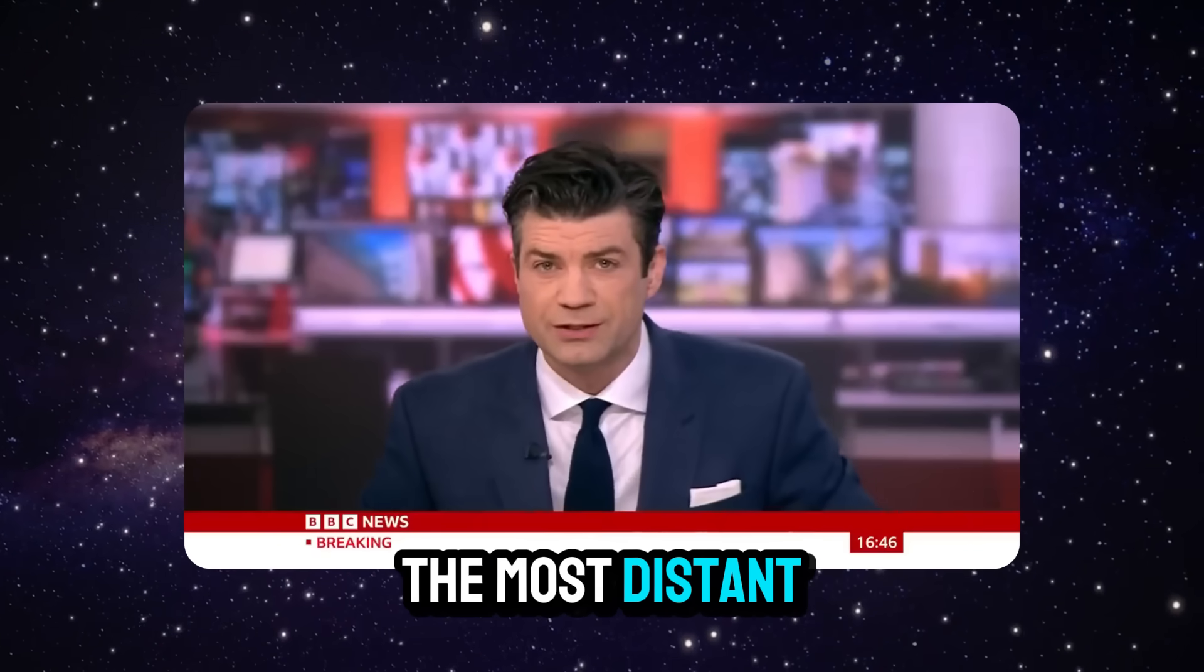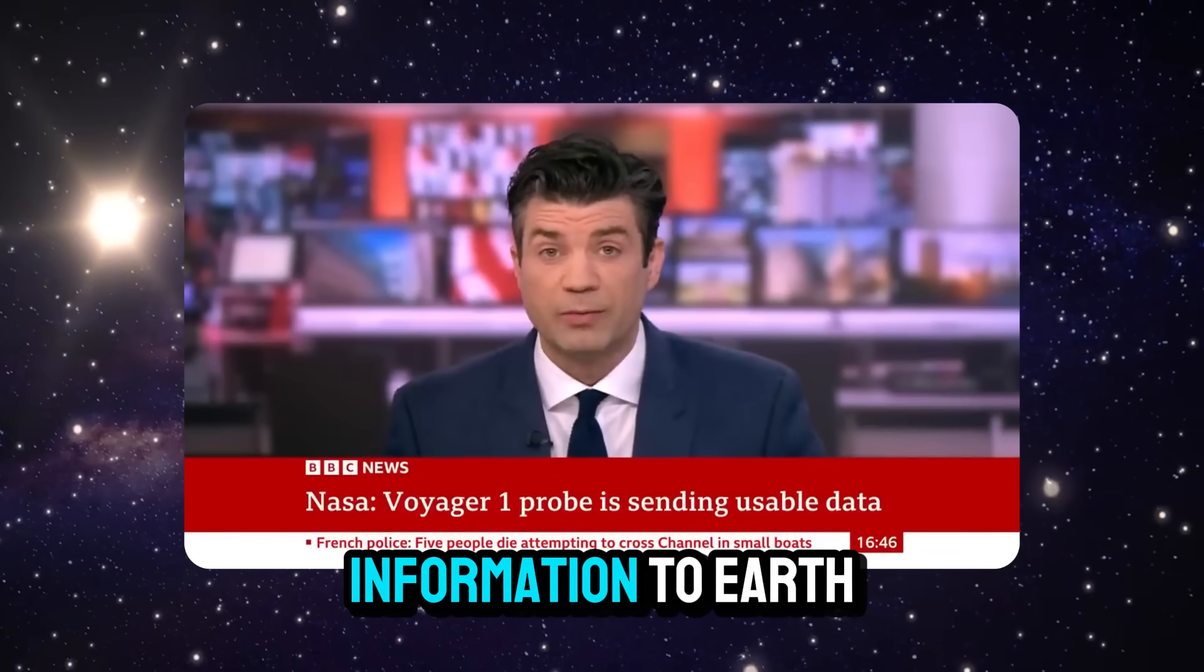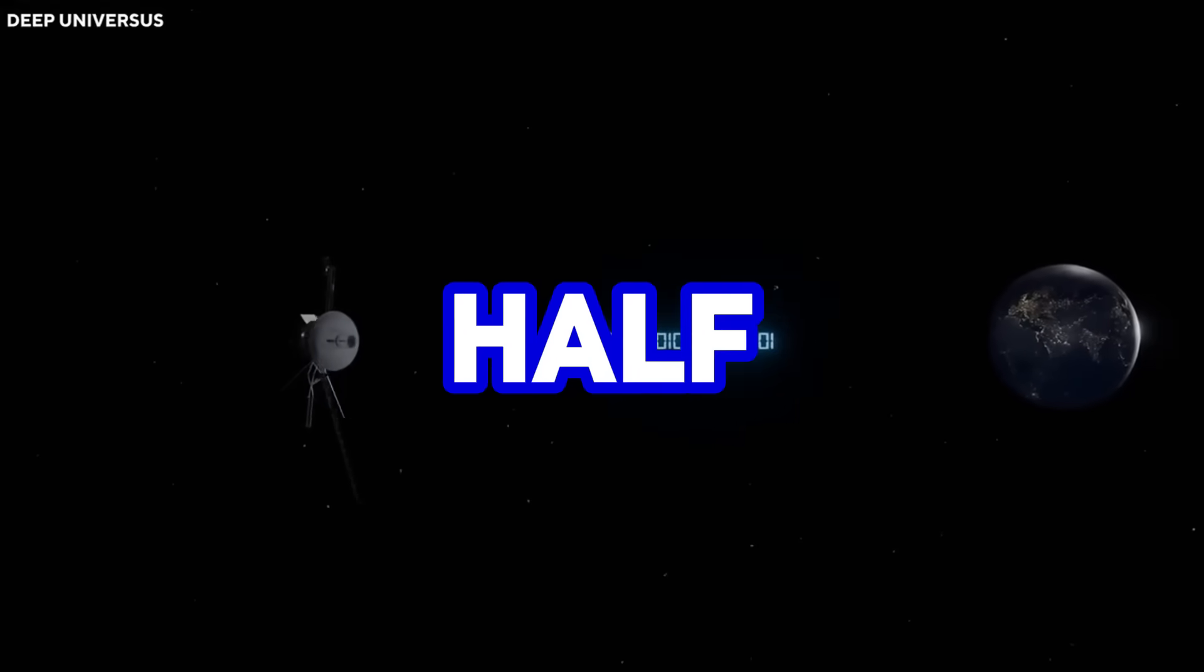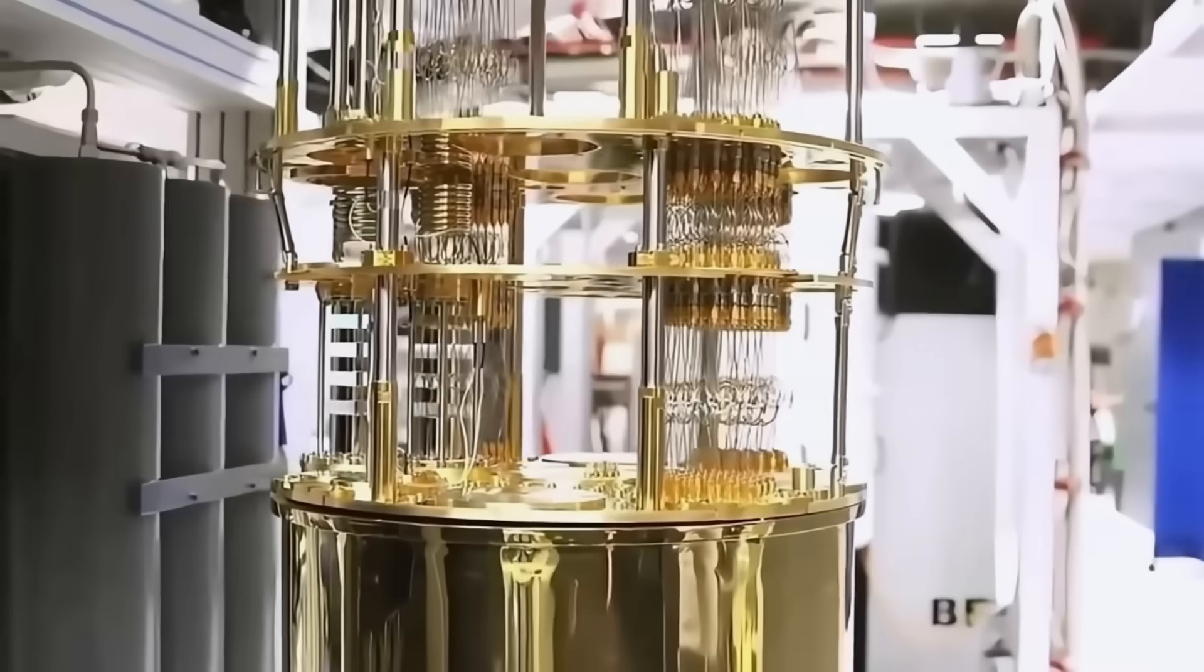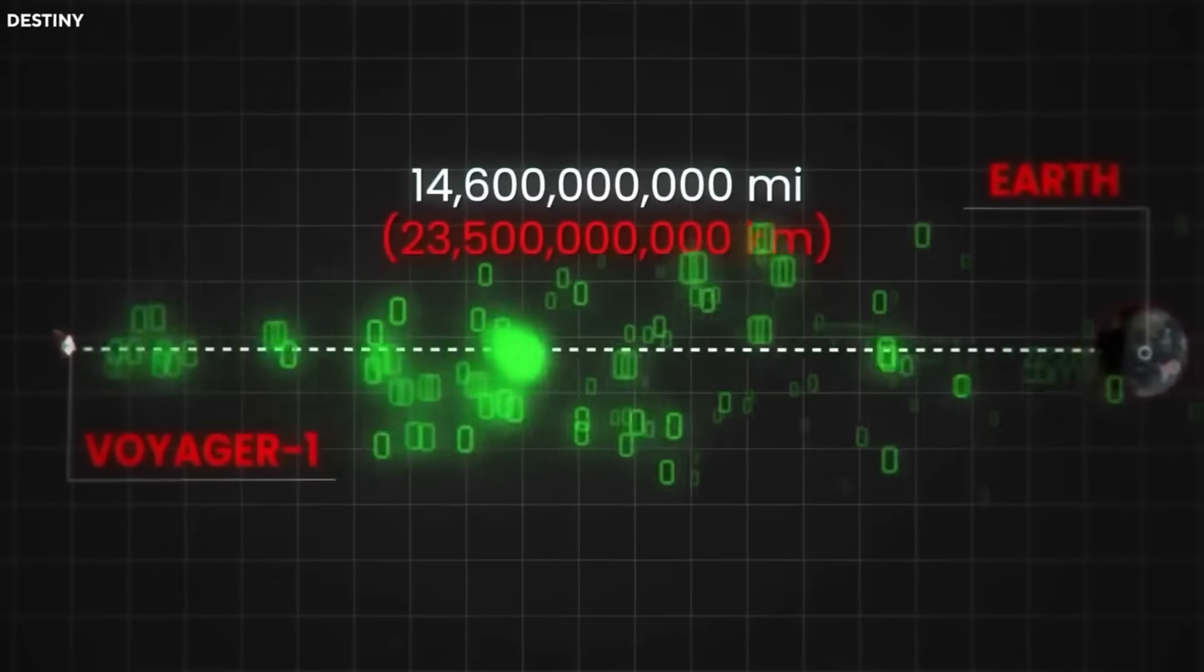Voyager 1 probe, the most distant human-made object in the universe, is sending usable information to earth again. Voyager 1 has been sending us signals for nearly half a century, but only now, thanks to a breakthrough in quantum computing, patterns have emerged in its transmissions that were invisible for decades.